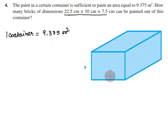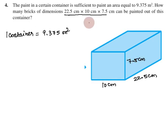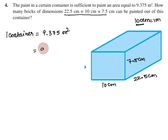One brick has dimensions: length 22.5 centimeters, breadth 10 centimeters, height 7.5 centimeters. The brick details are in centimeters, but the paint area is in square meters, so we need to convert. We know 100 centimeters equals 1 meter, so we need to compare square meters to square centimeters.